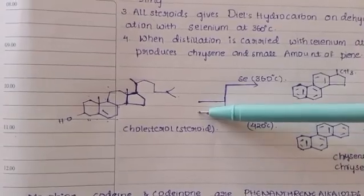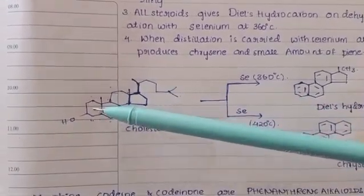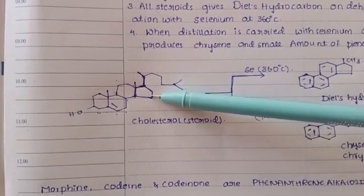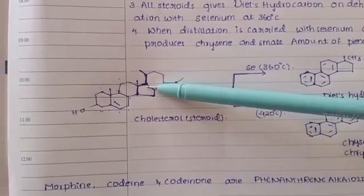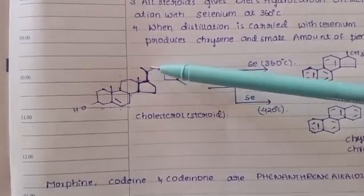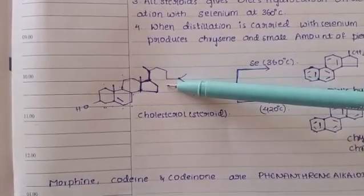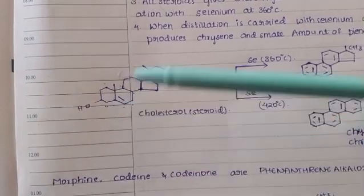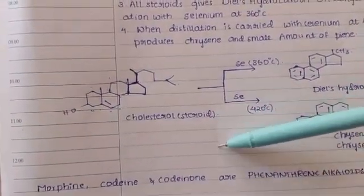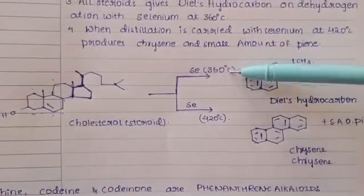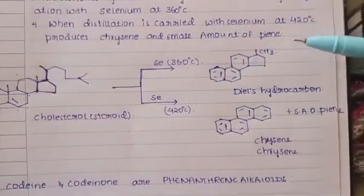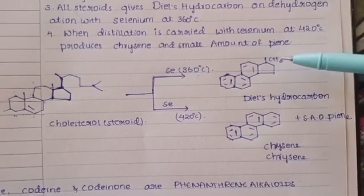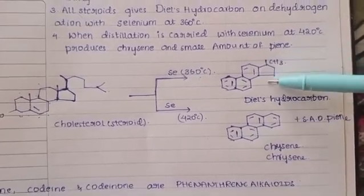This is the structure of cholesterol. The cholesterol structure has three six-membered rings and one five-membered ring. The six-membered rings are arranged here, and the five-membered ring extends from them. The chain continues with methyl groups and an alcohol group. This is the cholesterol anti-steroid compound. When distilled with selenium at 360 and 420 degrees, it gives Diels hydrocarbon, which contains three benzene rings and a methyl group.